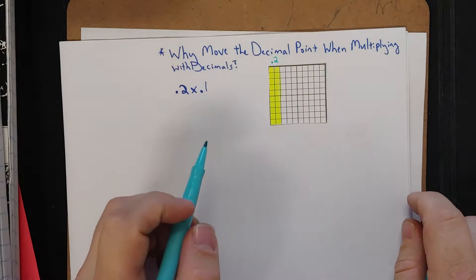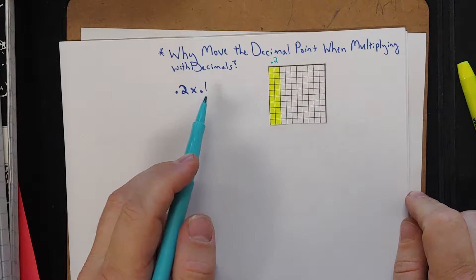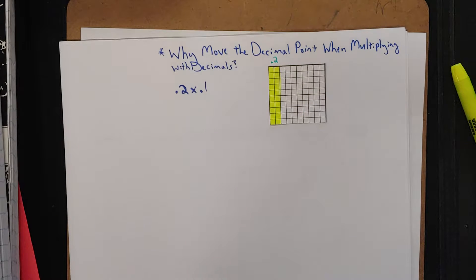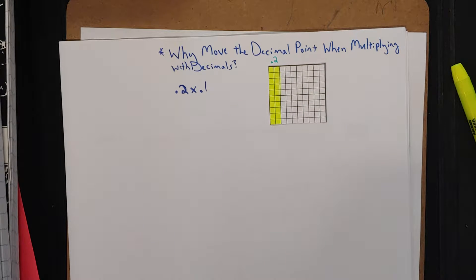All right, so what I want to try to accomplish here is answer the question: why move the decimal point when multiplying with decimals? And what do I mean?